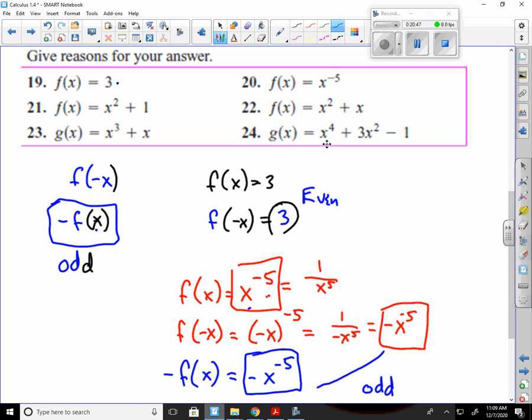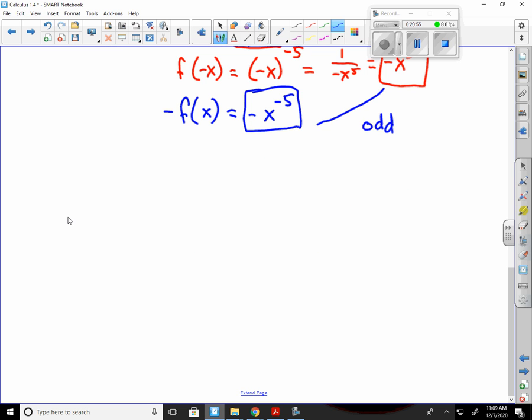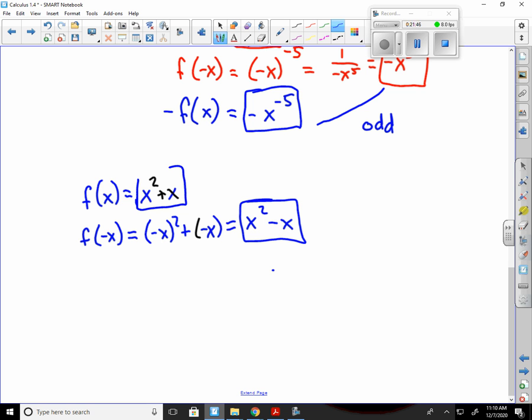Let's try number 22. This one is x squared plus x. So first I go f of negative x. It means I'll put a negative x in for every x. That's negative x squared plus negative x. Negative x squared becomes positive x squared, because anything squared becomes positive. And this would just stay as plus a negative x, which makes this minus x. If we look at this now, x squared minus x is not the same as x squared plus x, so it's not even.